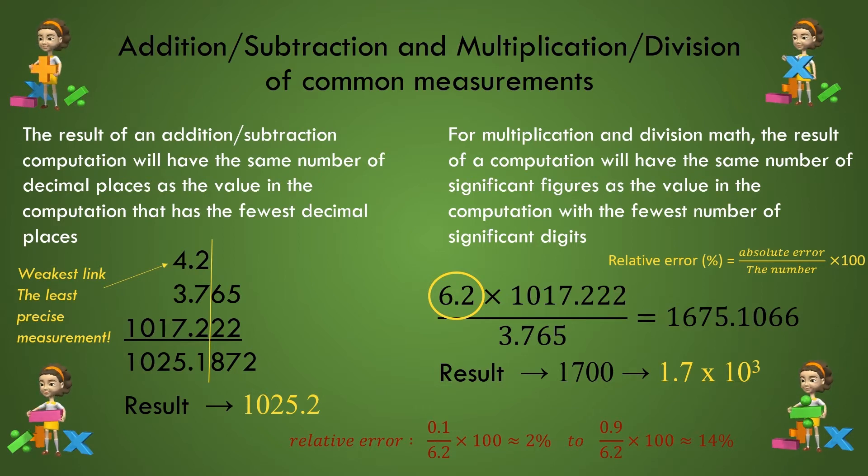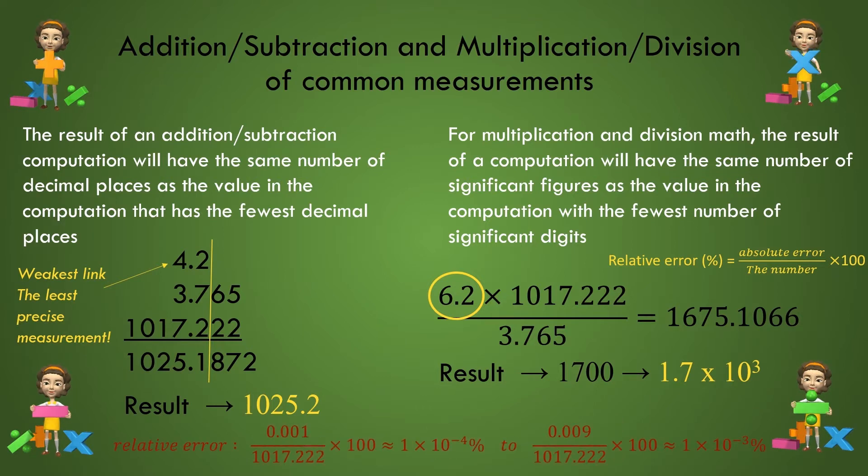But for the value 1017.222, we have a number with a greater number of sig figs and a number with a tiny, tiny error in comparison to the magnitude of the number itself. Here we can assume the absolute error to be in the range of 0.001 to 0.009. The relative error then is assumed to be in the range between 1 times 10 to the minus fourth and 1 times 10 to the minus third percent, significantly smaller than the 6.2 value.